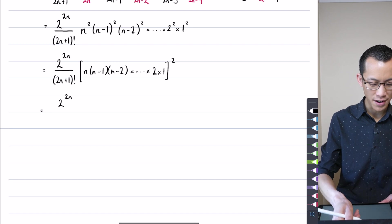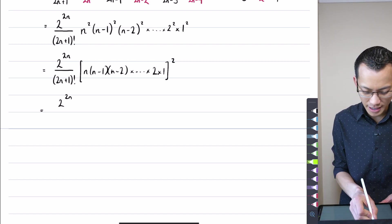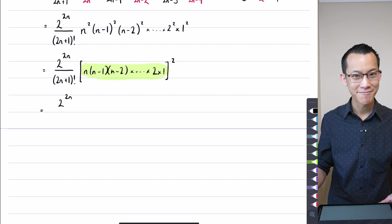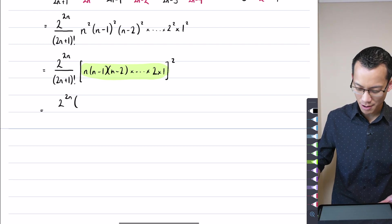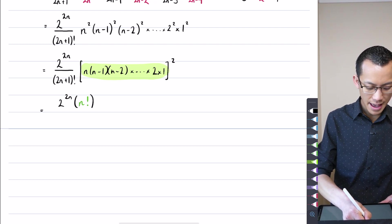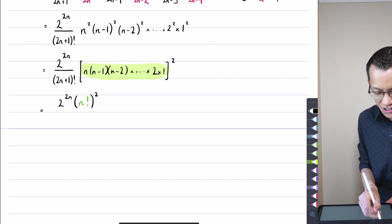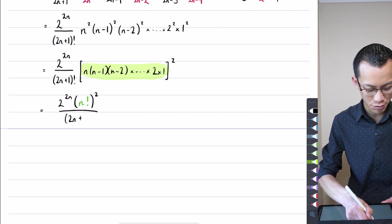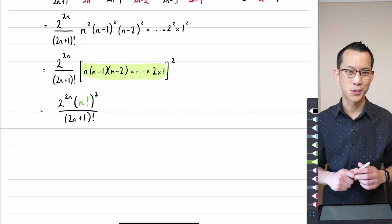Two to the two n hanging out the front. This, this thing here is by definition n factorial. So I'm going to write that with that color, n factorial. And it's all squared. And then on the denominator, shock horror, we actually got there 2n plus 1 factorial.